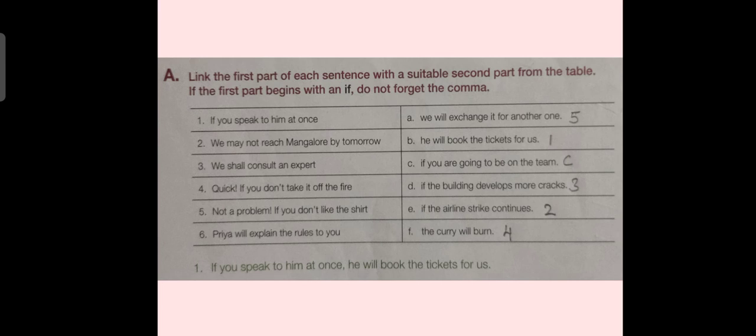Exercise A. Link the first part of each sentence with a suitable second part of the table. If the first part begins with an if, do not forget the comma. Here, dear students, this exercise is asking us to match options in first column with the options in second column. Here, you can also see that the part in first column are shown with numbers. And in the second part, in the second section, the second part of the sentence is shown by alphabets. So, what we will do?